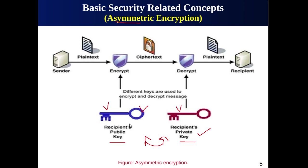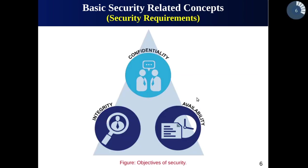In this figure you can see that the public key is used for encryption and the private key for decryption, though either key can be used. It is recommended to use the public key for encryption, while for digital signatures we normally use the private key for creating the signature and the public key for verification. To summarize: symmetric encryption uses a single key both for encryption and decryption, while asymmetric encryption uses two different but related keys. Now let's look at security requirements, also known as security objectives, security services, security goals, or the CIA triad.